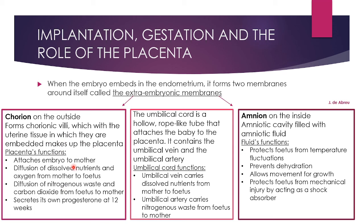You must know the placenta's four functions: it attaches the embryo to the mother; it allows for the diffusion of dissolved nutrients and oxygen from the mother to the fetus; it allows for the diffusion of nitrogenous waste and carbon dioxide from the fetus to the mother; and it secretes its own progesterone at 12 weeks, which helps maintain pregnancy. The fetus cannot eat or breathe independently, so it receives all oxygen and nutrients via the placenta.